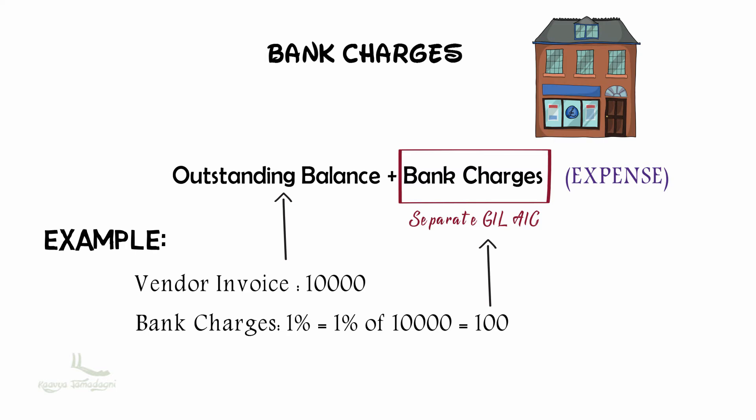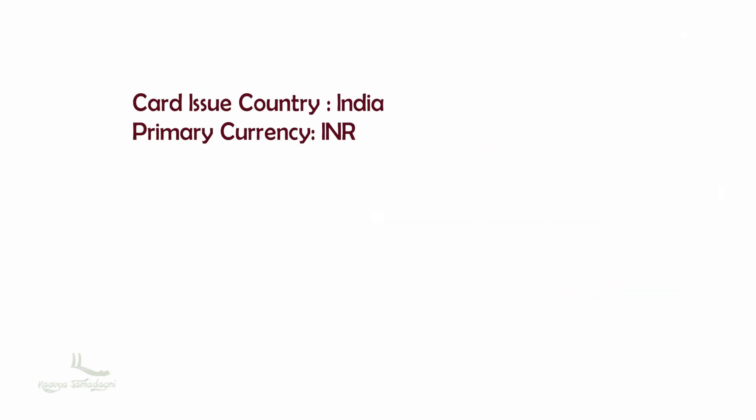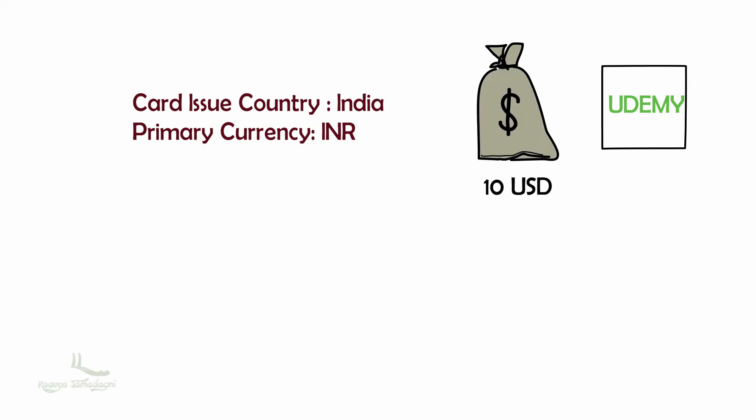As a real-world example, consider Udemy: if you buy a course from Udemy and make the payment using your credit card in US dollars or any foreign currency other than your own country's currency, you will be charged with bank transaction charges as a processing fee for currency conversion. For example, if the course price is 10 USD and you make the payment using a credit card issued in India, Udemy receives the 10 USD but you are additionally charged with foreign currency markup charges.